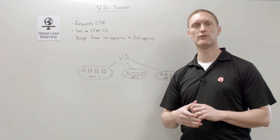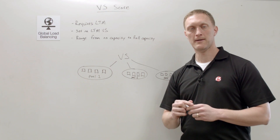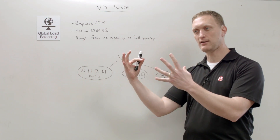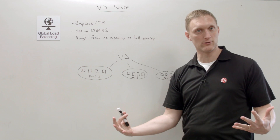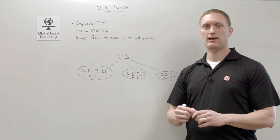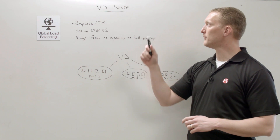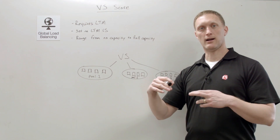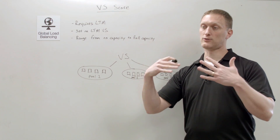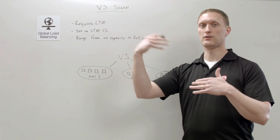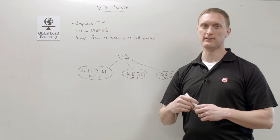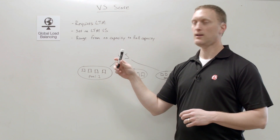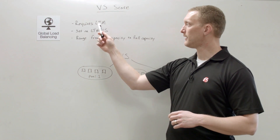When a client request comes into the GTM and you need to know which virtual server to choose, using virtual server score it's going to pick the one with the highest score. High score wins.